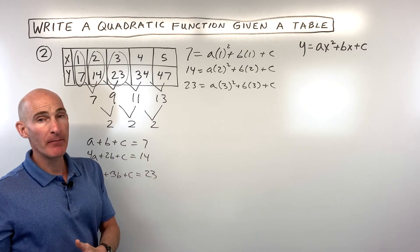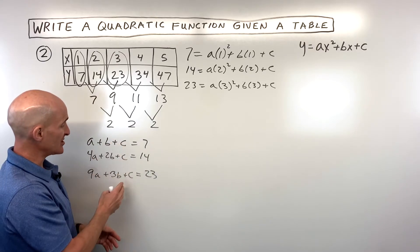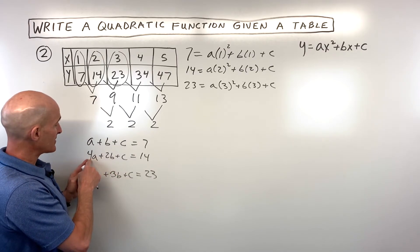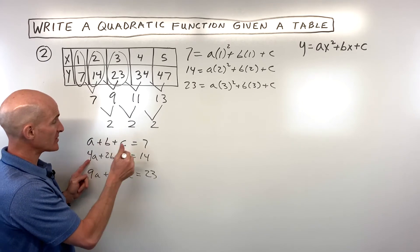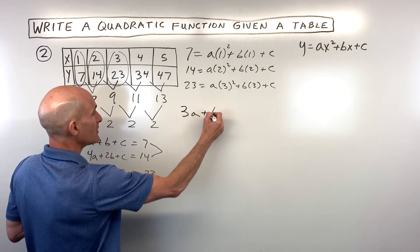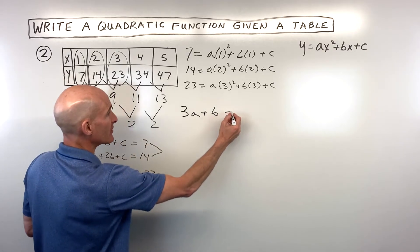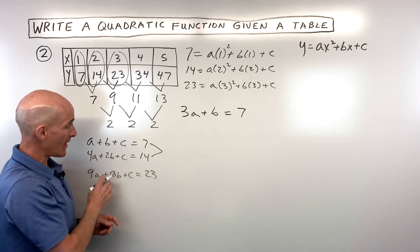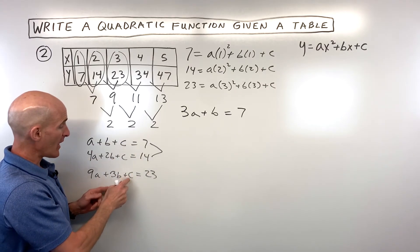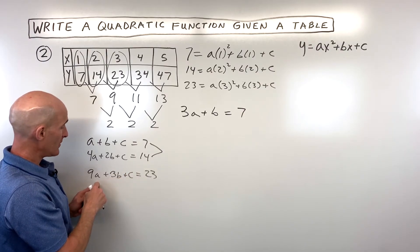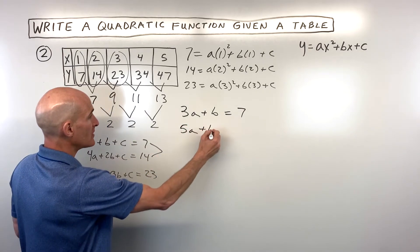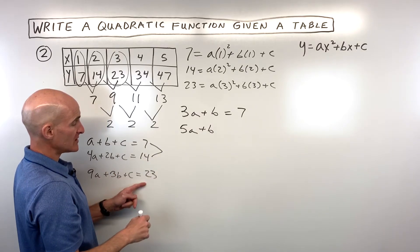We'll eliminate the c's since they're all coefficient 1. Subtracting the first equation from the second: 4a minus a is 3a, 2b minus b is b, c minus c is 0, and 14 minus 7 is 7, giving 3a plus b equals 7. Then subtracting the second from the third: 9a minus 4a is 5a, 3b minus 2b is b, c minus c is 0, and 23 minus 14 is 9, giving 5a plus b equals 9.